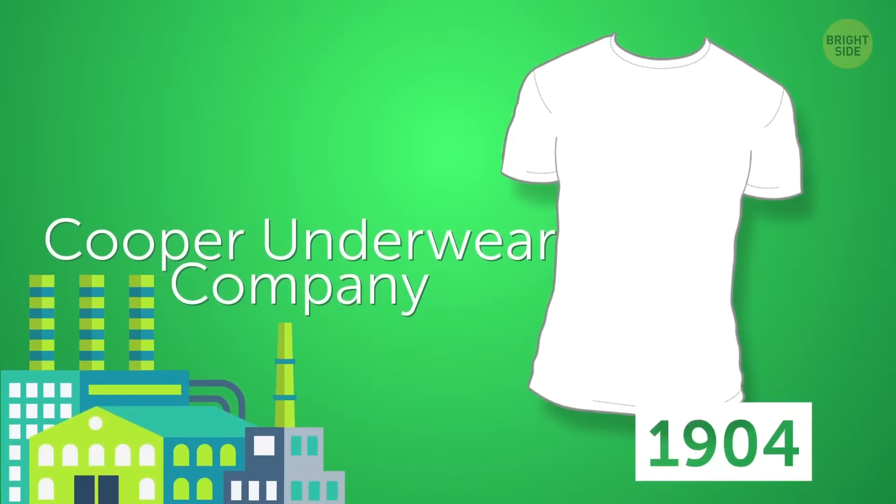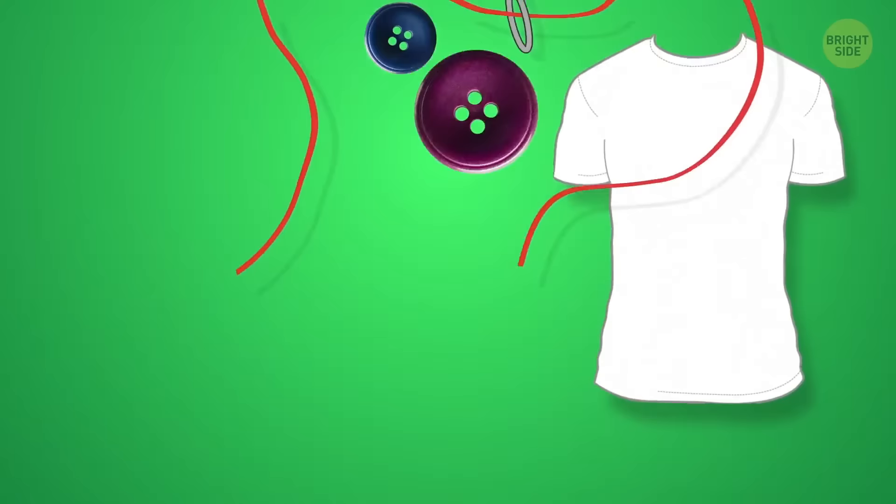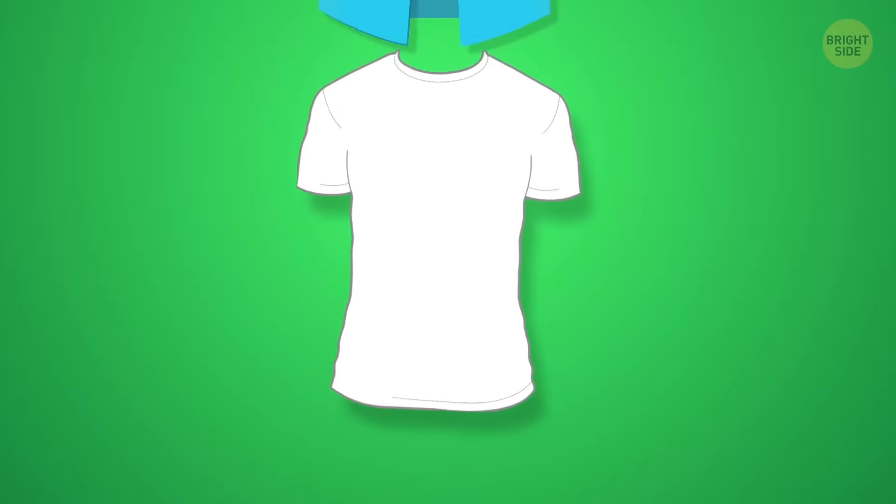T-shirts were invented at the beginning of the 20th century. In 1904, Cooper Underwear Company advertised them as a perfect product for bachelors who couldn't sew or reattach buttons to their shirts. Back then, you were supposed to wear a t-shirt under your collared shirt as an undergarment. And all t-shirts at that time were white. No funny prints or bright colors. In 1957,